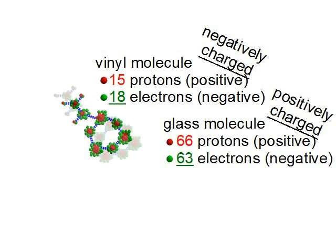And if we then move the molecules farther apart again, the electrons don't go back to where they were. The vinyl stays negatively charged, and the glass stays positively charged.